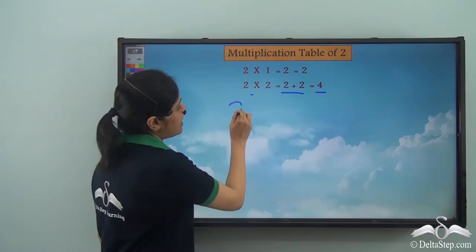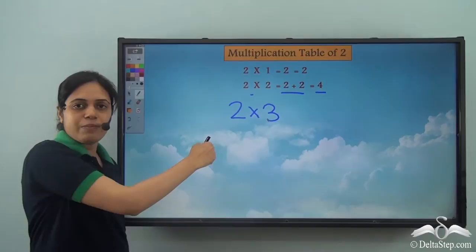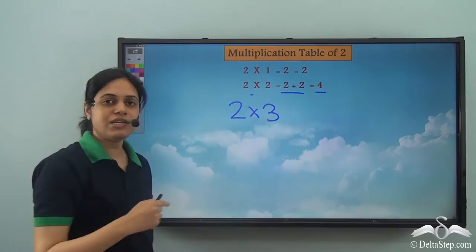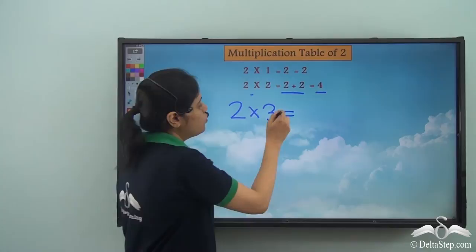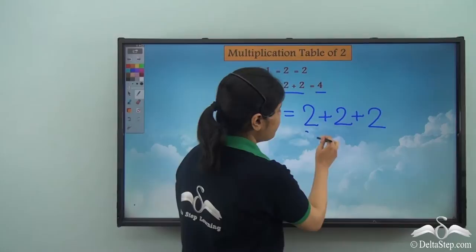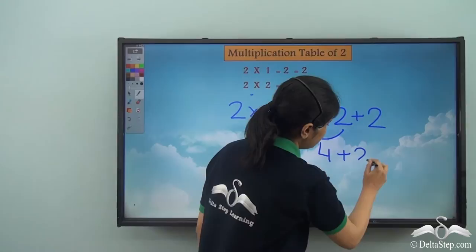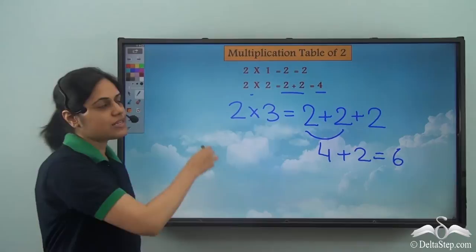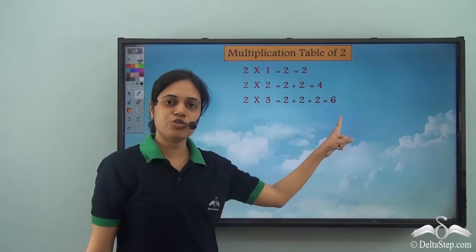Next I have two into three. This two stays the same because it's the multiplication table of two, and I keep increasing the other number by one. Two three times is two added to itself three times: two plus two plus two. Two plus two is four, and four plus two is six. So two into three is six.